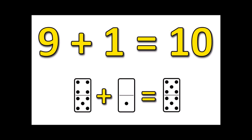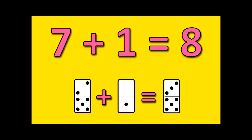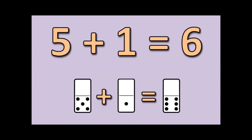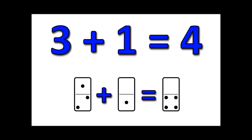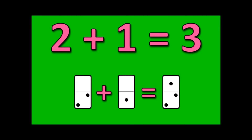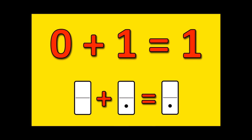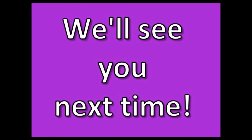Nine plus one is ten. Eight plus one is nine. Seven plus one is eight. Six plus one is seven. Five plus one is six. Four plus one is five. Three plus one is four. Two plus one is three. One plus one is two. Zero plus one is one. That's a wrap, kids. You did a fantastic job. We'll see you next time.